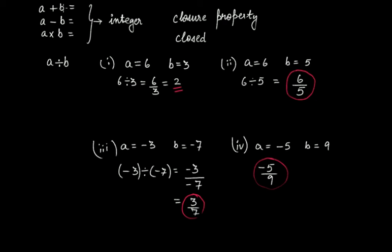Unlike addition, subtraction, and multiplication — which always follow the closure property no matter what — in the case of division, the result will not always be an integer. Sometimes it may be, but sometimes it may not. That is why we say division does not follow the closure property, because for closure property it must always be true. As we saw, only the first case was closed under division; the second, third, and fourth cases were not.